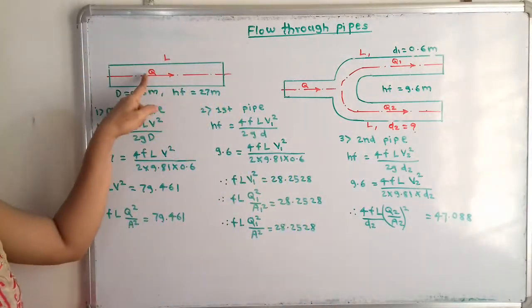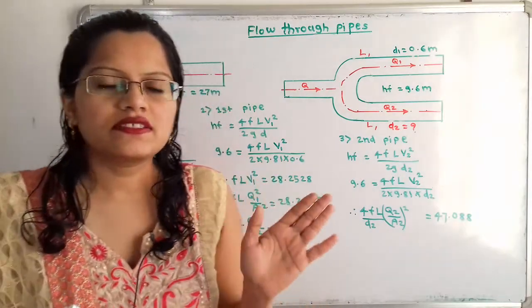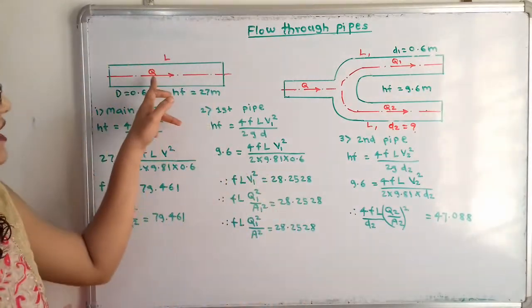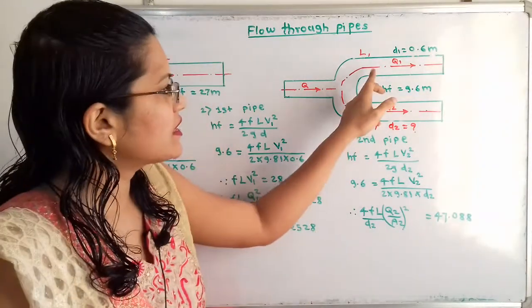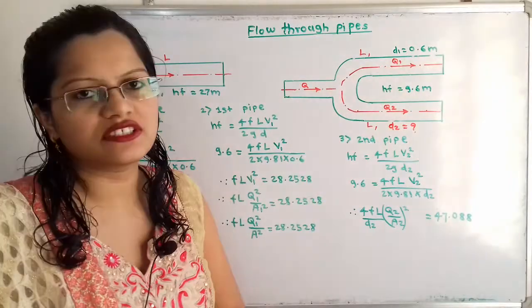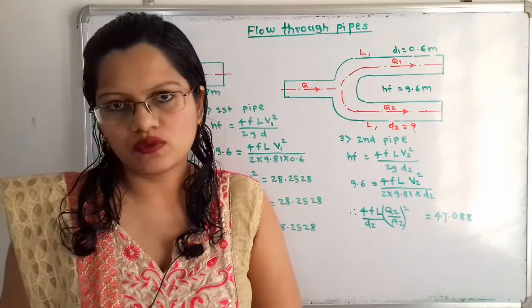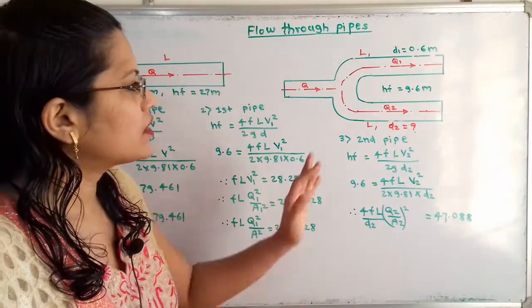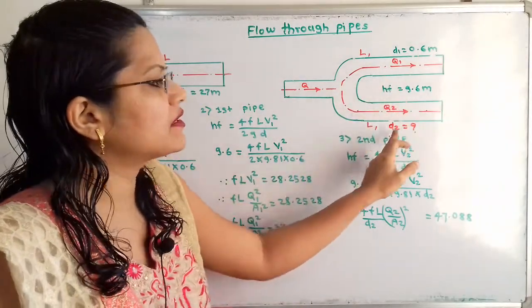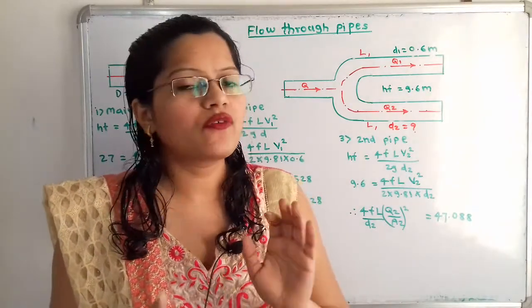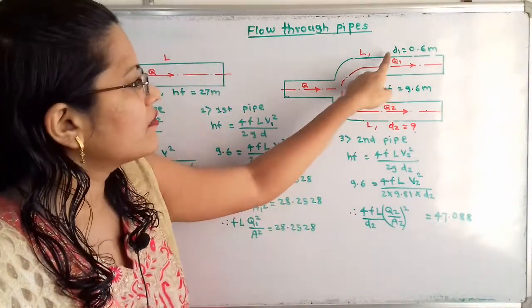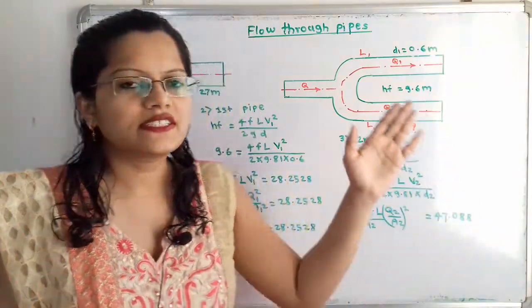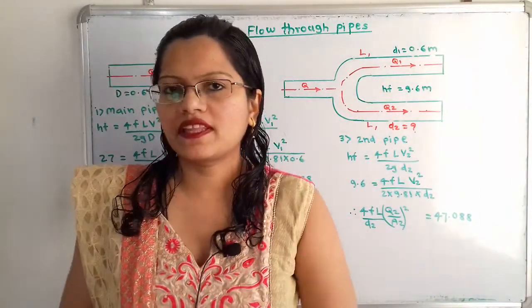In the main pipe the discharge Q is there, but when the parallel pipe is connected, this discharge gets divided into two parts. The first pipe carries discharge Q1 and the second pipe carries discharge Q2. The length remains the same, and we need to find the diameter D2 for the connected pipe. The first pipe diameter D1 remains 0.6 m.